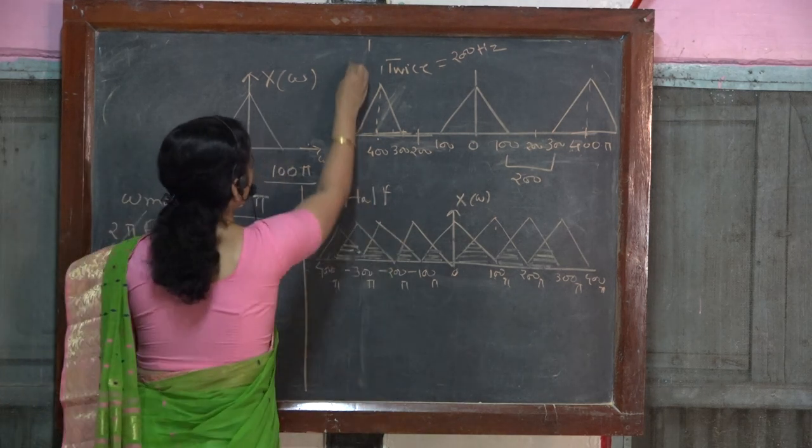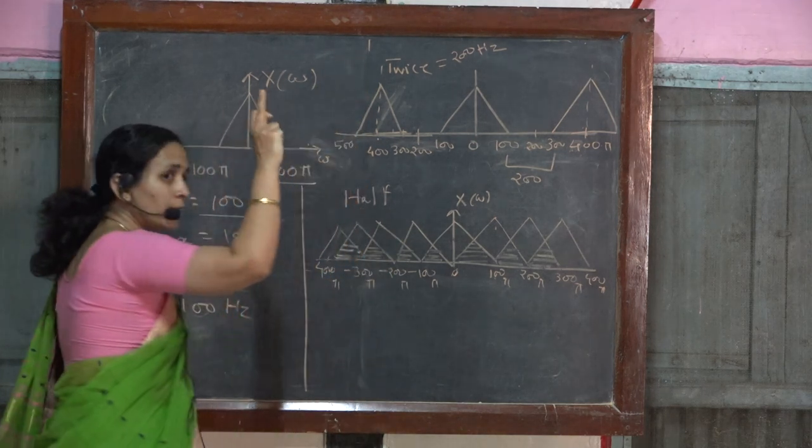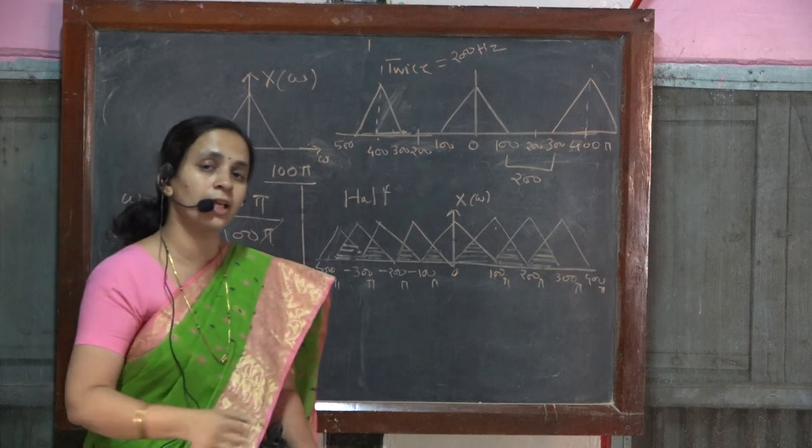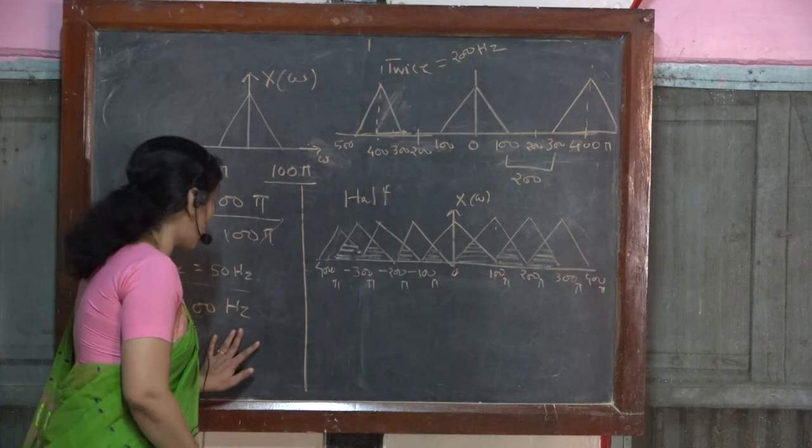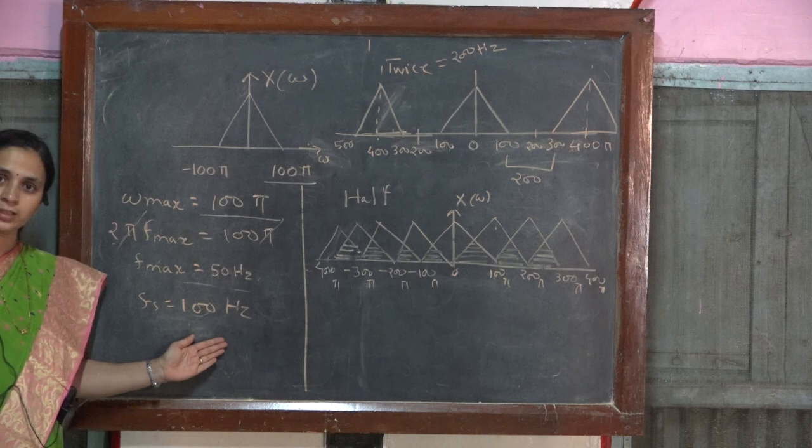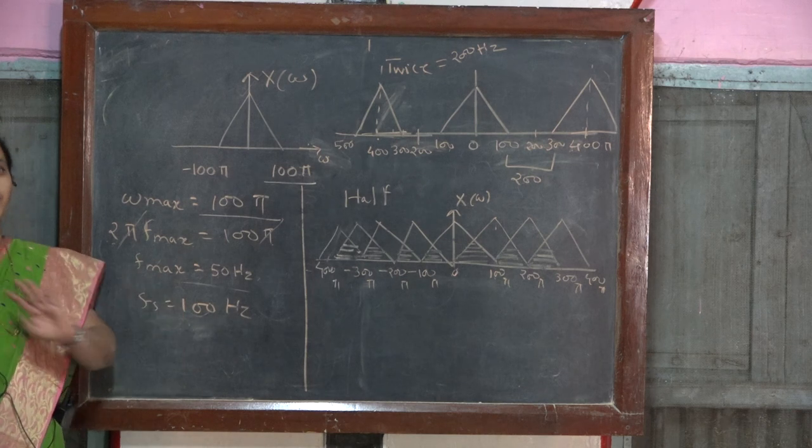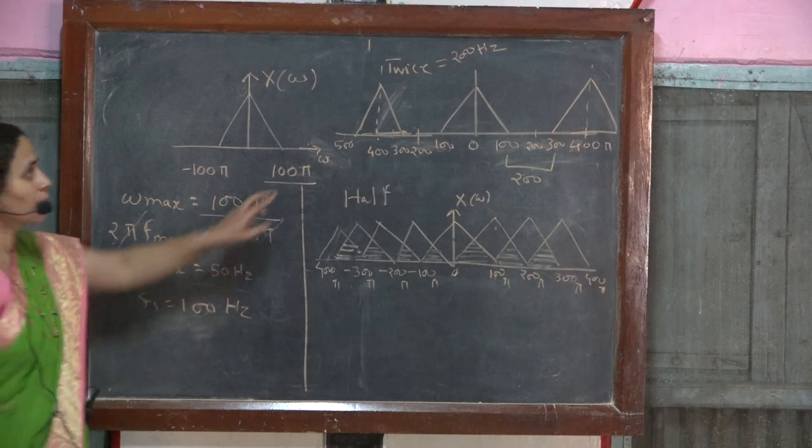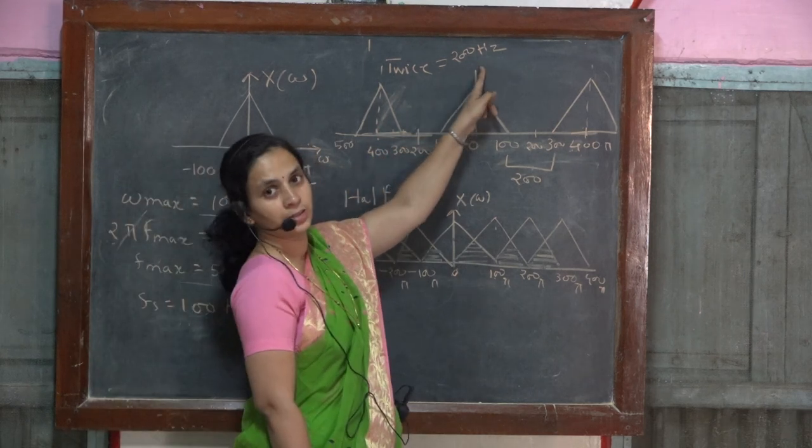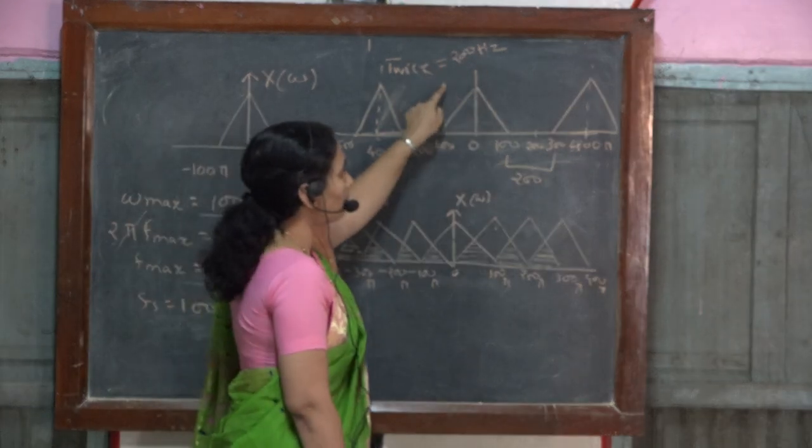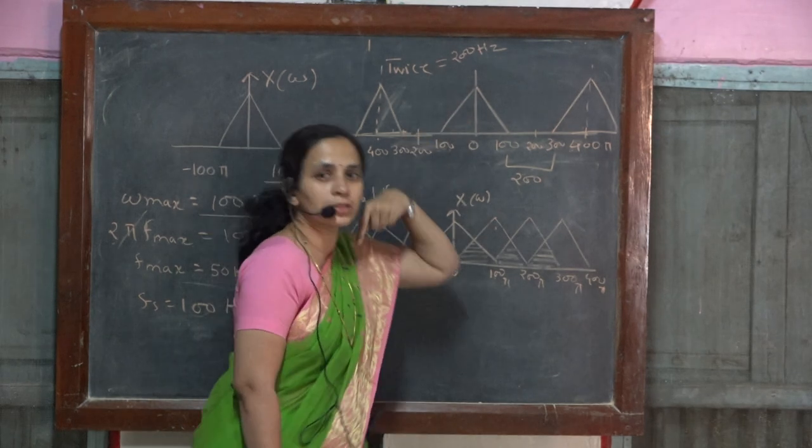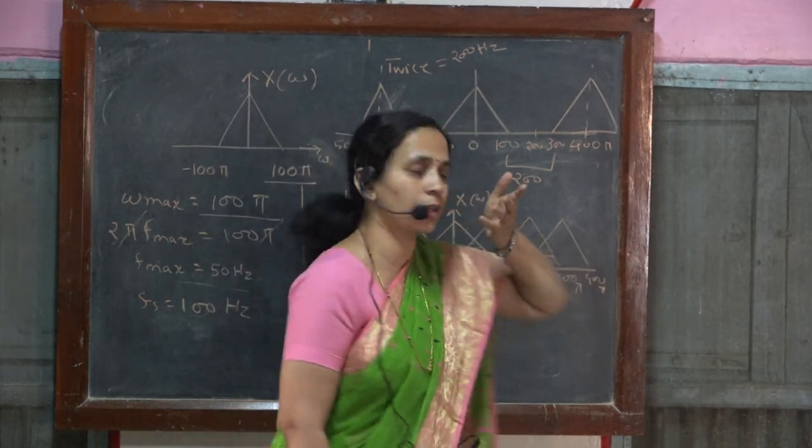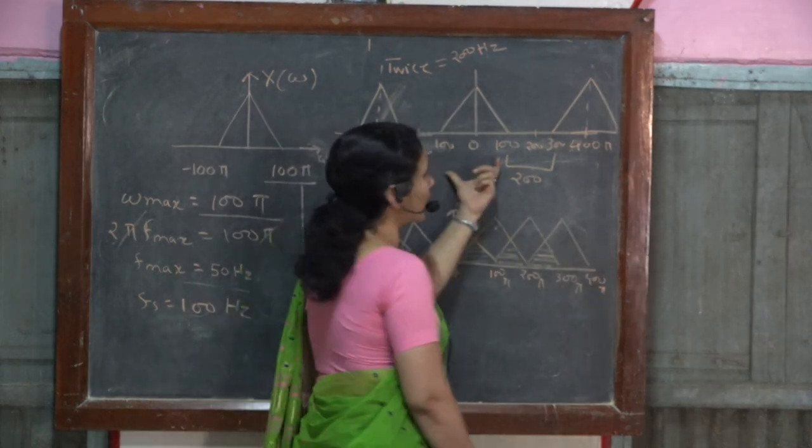So now the first task here is to comment on the result in case it is sampled with the sampling frequency twice greater than the sampling rate and half than the sampling rate. So twice greater than the sampling rate is 200 hertz.